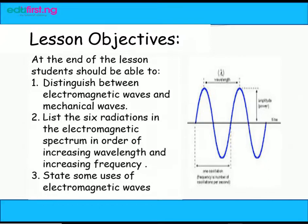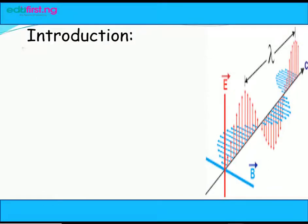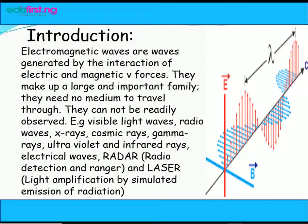Introduction. Electromagnetic waves are waves generated by the interaction of electrical and magnetic forces. They make up a large and important family. They need no medium to travel through. They cannot be readily observed.